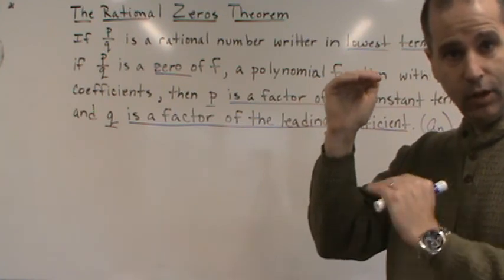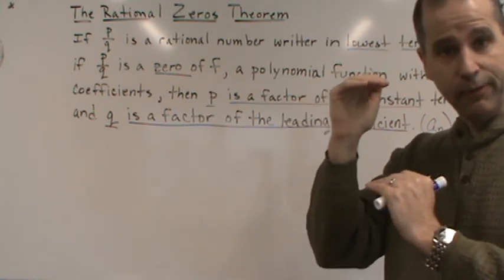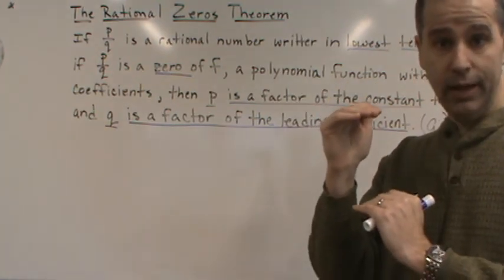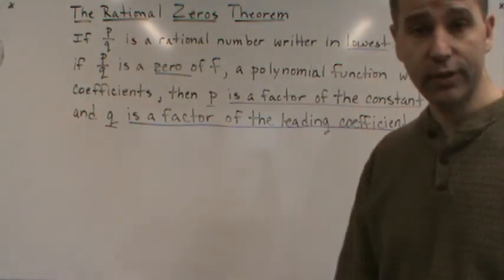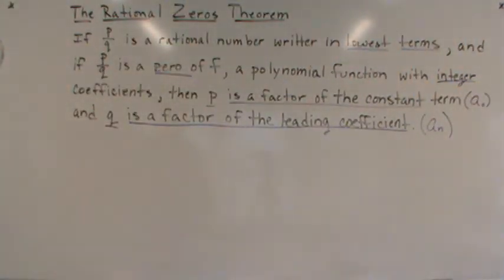divide them by all the different values of Q, and that should give me a list of values that could be a zero. That's what I'm going to use. So next we'll start using this, and we'll do a few examples. Have a good day.